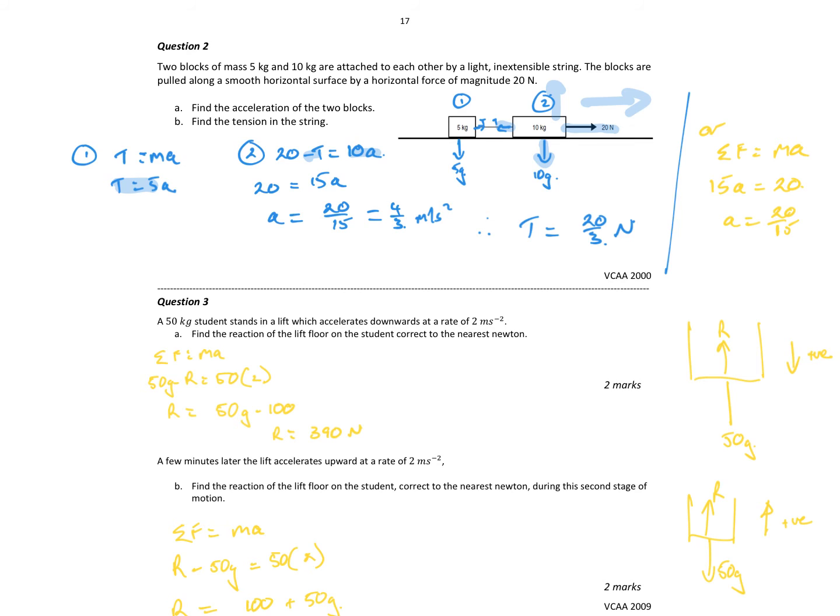We can substitute 5a into the tension, so we get 20 minus 5a equals 10a, which gives 15a. So a is equal to 20 over 15, which is 4/3 meters per second squared. The tension in the string: tension equals ma which is 5 times that which is 20 over 3 newtons. Similarly, sum of the forces equals ma. We've got a total of 15 kilos because there's no other frictions involved. We've got a 15 kilo weight, 20 newtons acting to the right, acceleration is 20 over 15.